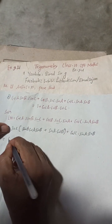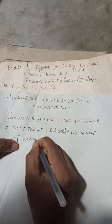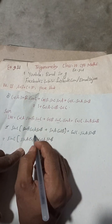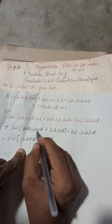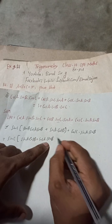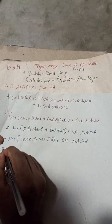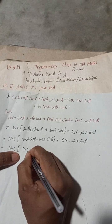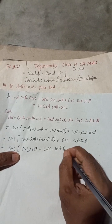Now rearrange so that we have sin C multiplied by (sin A·cos B + cos A·sin B) plus cos C·sin A·sin B. The arrangement is sin A·cos B plus cos A·sin B, which is the addition formula for sin. This gives sin C·sin(A+B) plus cos C·sin A·sin B.